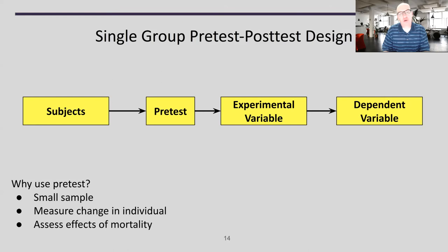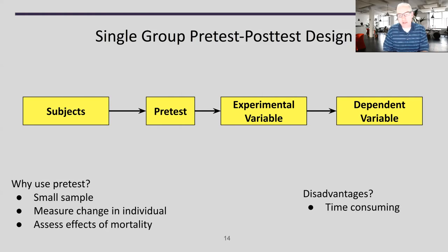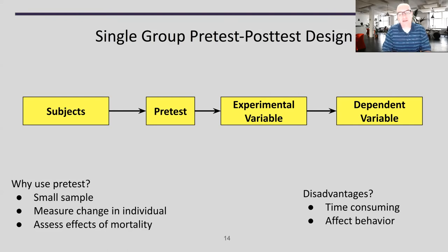In cases with multiple groups, the pre-test also helps assess the effects of mortality — not literally, but people who don't complete the study. If somebody drops out, I want to know what effect that had on my sample and whether it biased my results. Some disadvantages: pre-tests are time-consuming, adding another step in the process. More importantly, pre-tests can affect behavior — giving somebody a pre-test might change how they approach the treatment and introduce bias. I have to be careful about what I do in a pre-test.